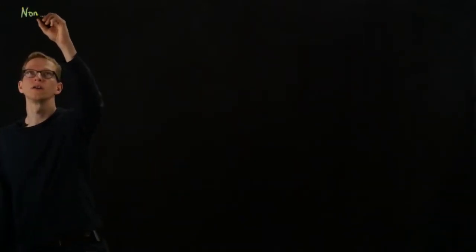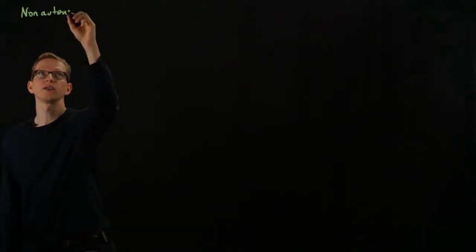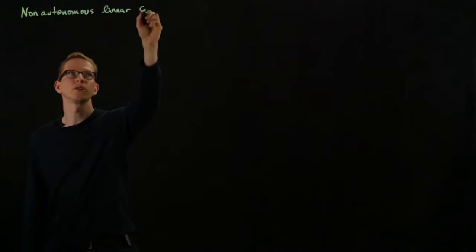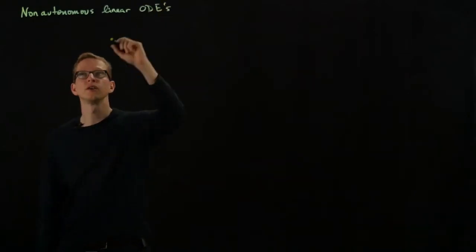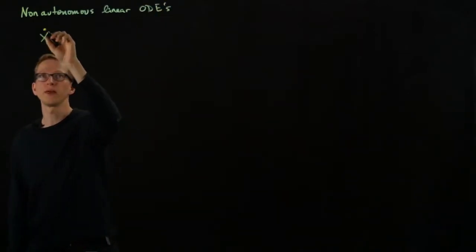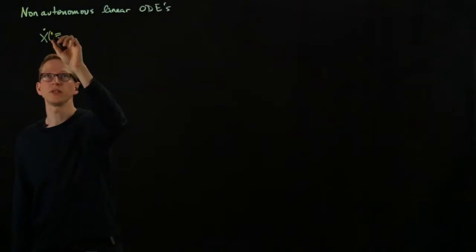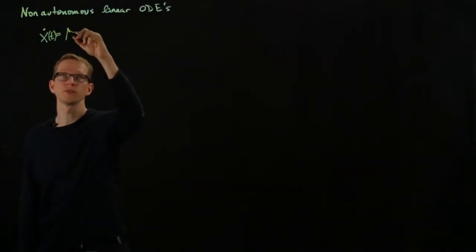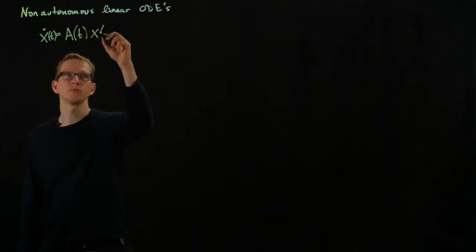So we just learned that the exponential of a matrix can be used to solve autonomous linear differential equations. But for non-autonomous linear ordinary differential equations, which are typically of the form x dot equals, and let me now put the time explicit because our solutions depend on some parameter t, and now our matrix also depends on t.